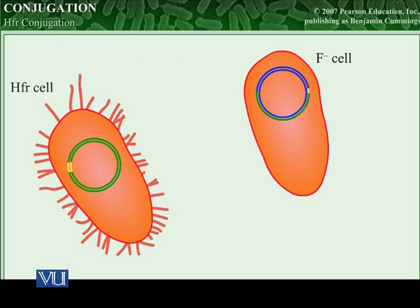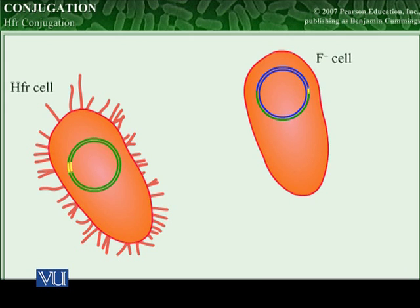However, the DNA from the donor can recombine with the recipient's chromosome, giving the recipient new chromosomal genes. So, as seen here, the high-frequency recombination cell transferred part of its fertility factor, and the recipient became a recombinant but still remains an F-negative cell, because it is not able to transfer the genes it acquired from the HFR cell to another cell. That is a big difference between regular conjugation and high-frequency recombination cell conjugation.